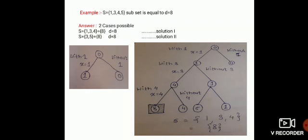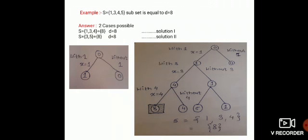Now the problem is how to solve this by using a state space tree. Initially the first step starts with 0 because no element is in the tree yet. In figure number 1, the subset of 0 is with 1 and without 1 — you add one element on the left side and copy 0 as-is on the right side.